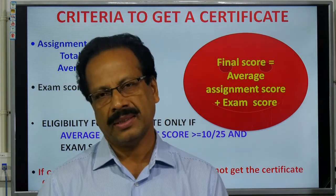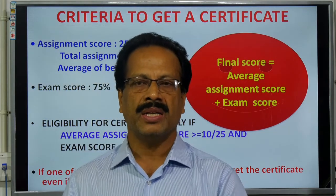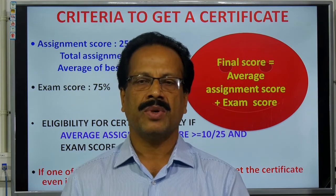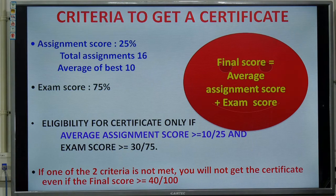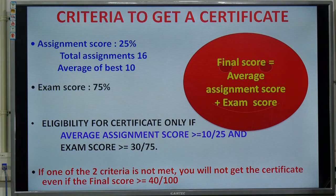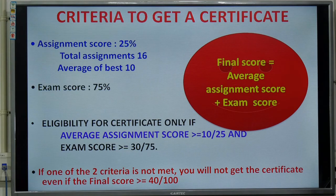Credits will be awarded based on two criteria: continuous assessment and an end-of-term written examination. Assignments form 25% of the score, with a total of 16 assignments, and we will take the average of your 10 best assignments. The exam score accounts for 75%. If you get 10 out of 25 for assignments and 30 out of 75 for the achievement examination, you will qualify for a certificate. The final score will be the total of the average assignment score and the exam score.